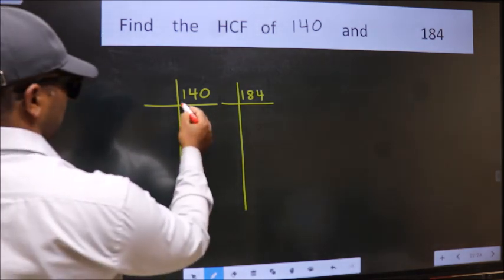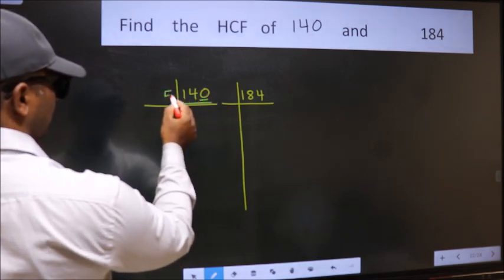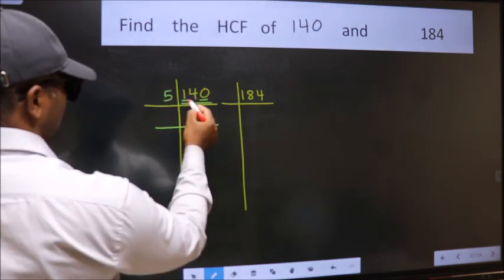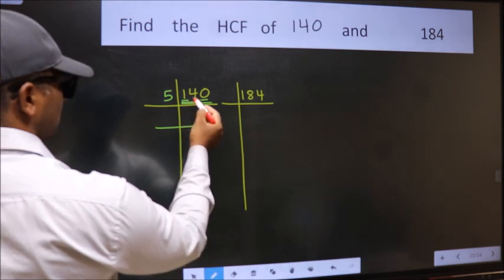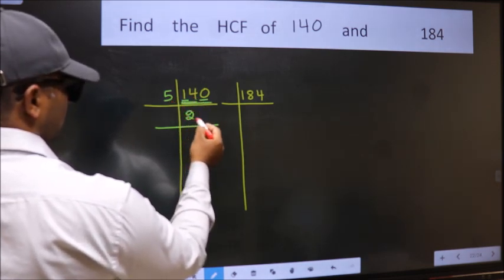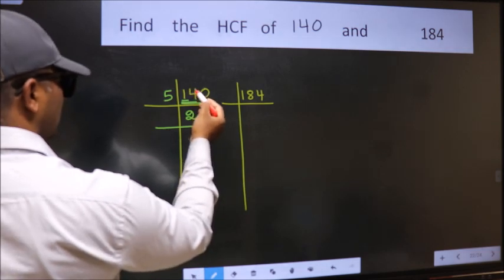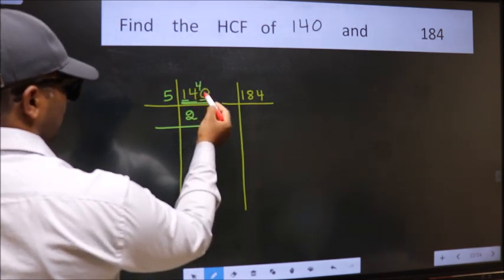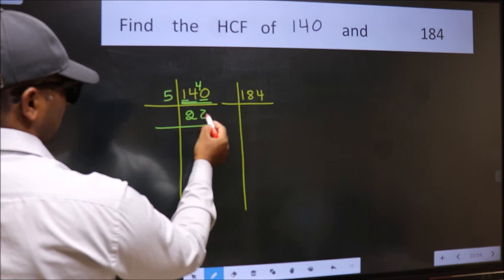In this number, last digit 0 so take 5. First number 1 smaller than 5 so 2 numbers 14. A number close to 14 in 5 table is 5×2=10. 14-10=4, 4 carried forward 40. When do we get 40 in 5 table? 5×8 is 40.